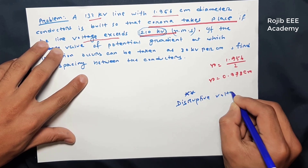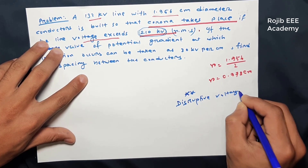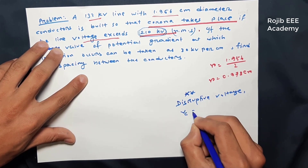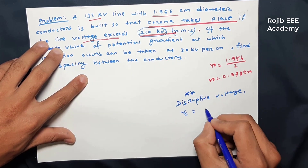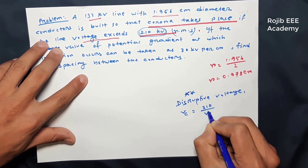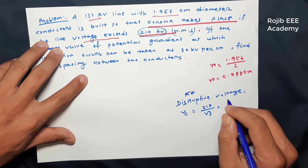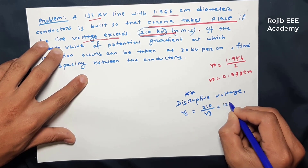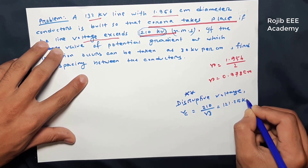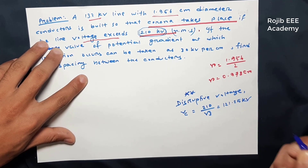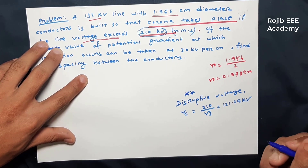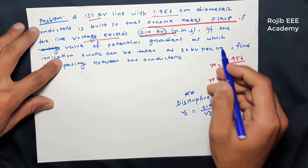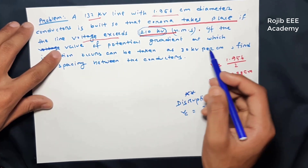The disruptive voltage Vc is equal to 210 divided by root 3, which gives approximately 121.25 kilo volts.